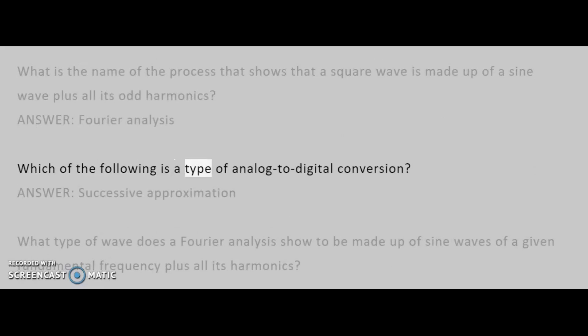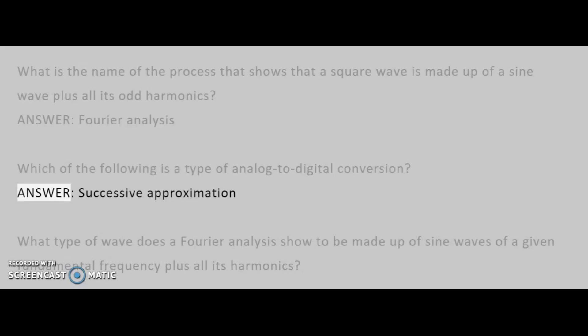Which of the following is a type of analog to digital conversion? Answer: Successive approximation.